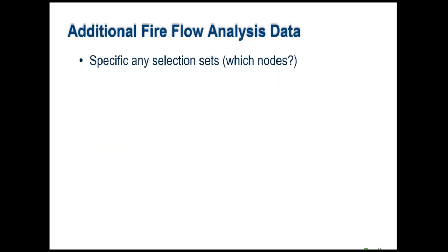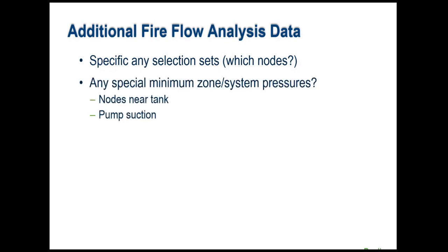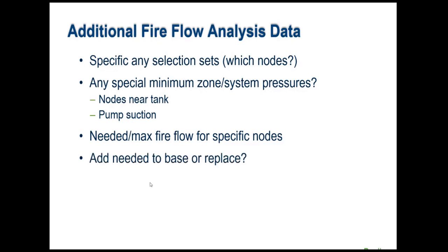You have to provide some additional data to WaterGEMS beyond the minimum for a regular steady-state simulation. You need to specify which nodes to analyze, what the minimum pressure is — in the US usually 20 psi — and the range of fire flows you want. The minimum lets you judge whether you met the needed fire flows; the maximum keeps iterations from going to very high numbers for large mains. You also specify whether you're adding fire flows to the base demand at that node or replacing it. This is all set inside the calculation dialog by changing the run type from steady state or EPS to fire flow analysis.